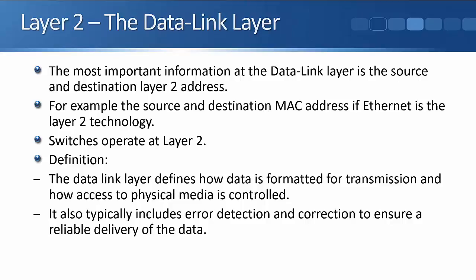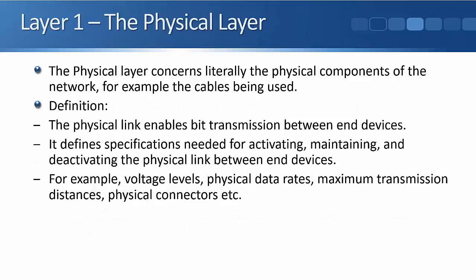Switches operate at layer two — our switches are layer two aware devices. The definition for the data link layer: it defines how data is formatted for transmission and how access to the physical media is controlled. It also typically includes error detection and correction to ensure a reliable delivery of the data. And finally, we have layer one, the physical layer. This concerns literally the physical components of the network, for example the actual physical cables being used. The definition of the physical layer: it enables bit transmission — the ones and zeros — between end devices. It defines specifications needed for activating, maintaining and deactivating the physical link between end devices, for example voltage levels, physical data rates, maximum transmission distances, and physical connectors.